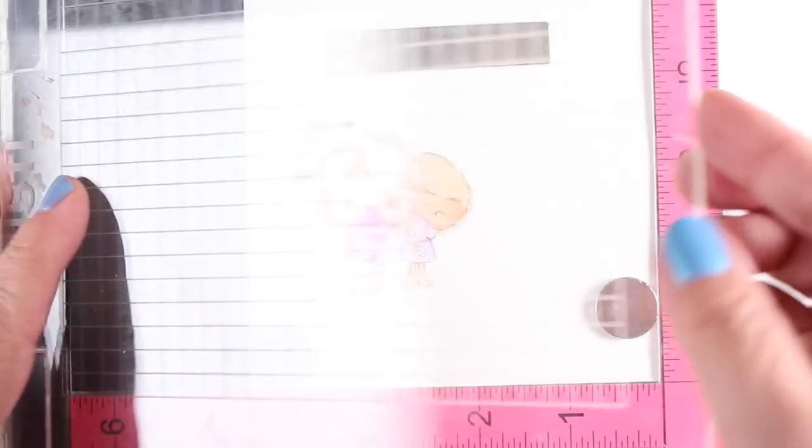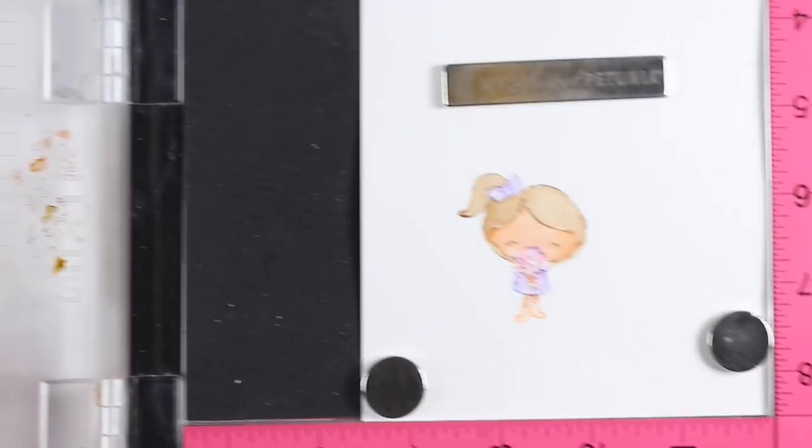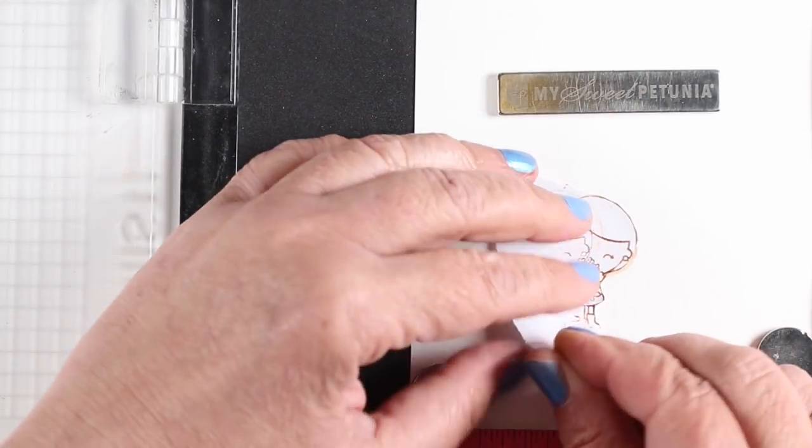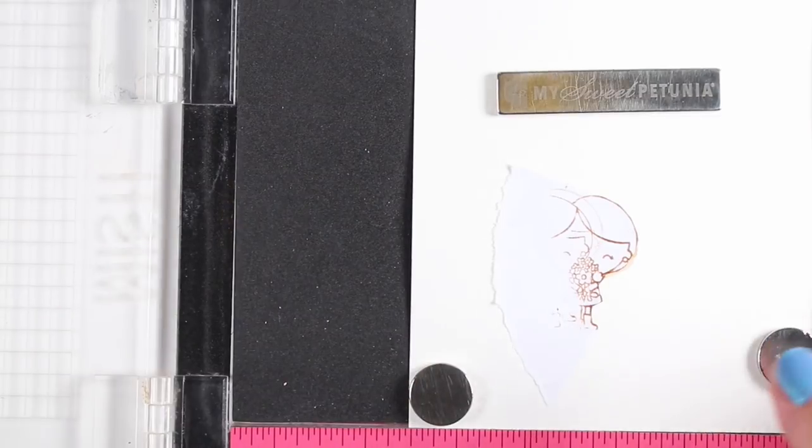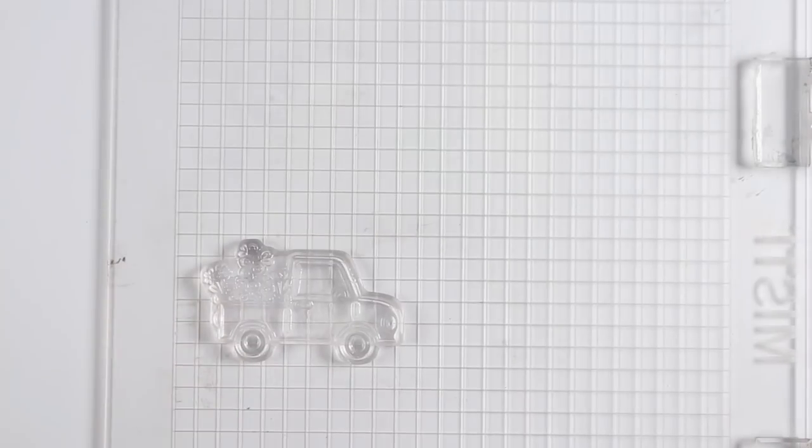But since it's in the MISTI, I can stamp right over this and get all that detail right back. So next I stamped just kind of half of her on a piece of masking paper so I could make a mask and then stamp the truck. And the truck is all lined up,